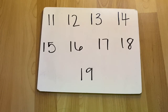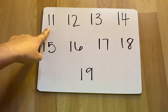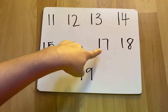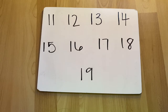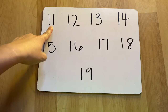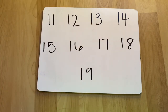Now I want you to look at all these teen numbers and tell me how are all these numbers alike, or what is the same about all these numbers? That's right — all of these numbers have the number one in front of them. But what do you think the number one in front of these numbers means? It means that there is a group of 10 inside that teen number, and the second number represents how many more come after that group of 10.